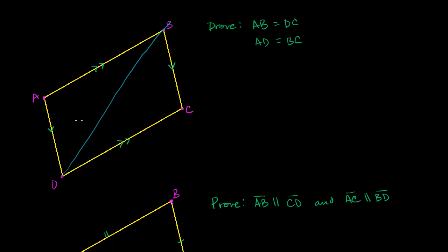If you view it that way, you can pick out that angle ABD is going to be congruent to angle BDC, because they are alternate interior angles. You have a transversal intersecting parallel lines. So we know that angle ABD is congruent to angle BDC.